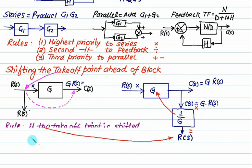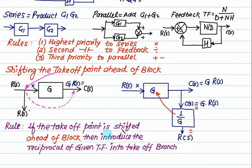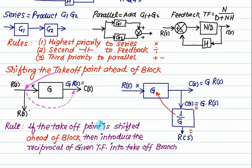So the rule is this: if the takeoff point is shifted ahead of the block, then introduce the reciprocal of the given transfer function in the takeoff branch — that is 1/G. That is the reciprocal of this transfer function. Then the modification is permitted.